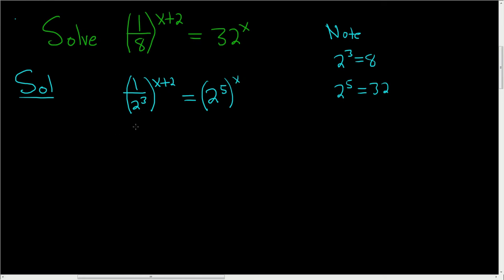Be really, really careful with the parentheses. Now we can bring the 2 upstairs, and so the exponent becomes negative, and we still have the x plus 2.